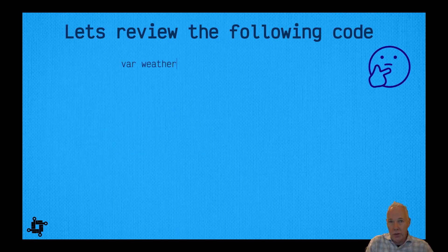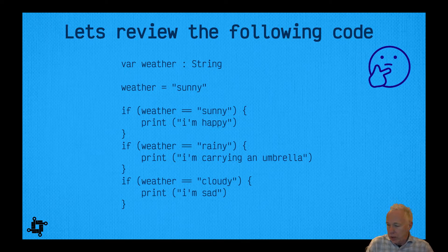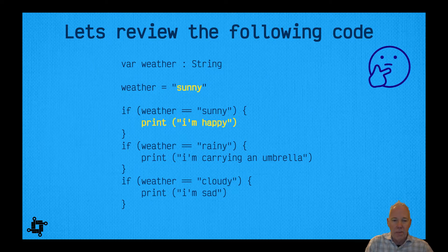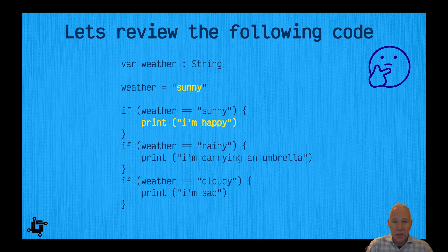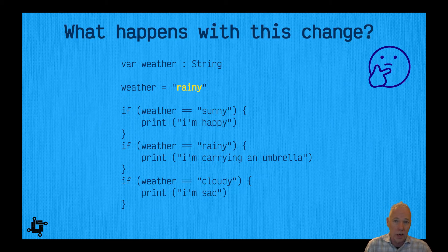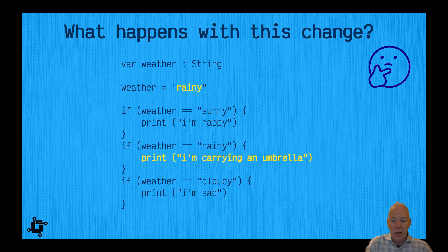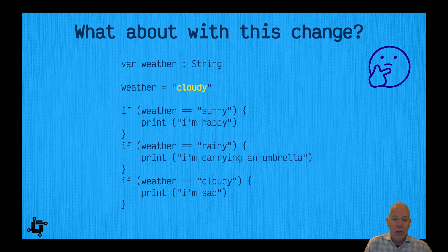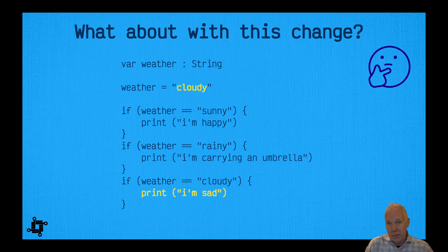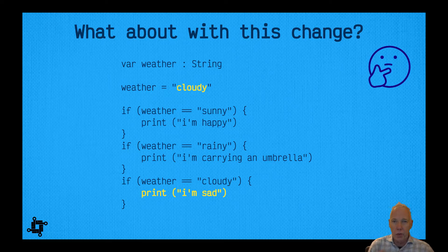Let's review the following code and talk through how it really works. We have this statement where weather is assigned to a string value of sunny. We've highlighted the print that's going to happen when this if statement is executed, because sunny does equal sunny. If we change the weather to rainy, we get the second case — I'm carrying an umbrella. And if the weather is cloudy, we get I'm sad.